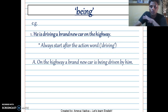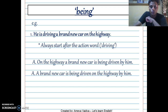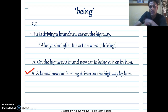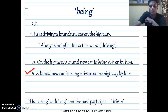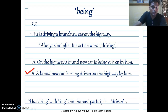Consider these options: number one — 'On the highway a brand new car is being driven by him'; number two — 'A brand new car is being driven on the highway by him.' The second option is correct. Start after 'driving' — 'a brand new car is being driven on the highway by him.' Remember to put the 'by' part at the end. Also note: 'being' is always used with a past participle — here 'drive, drove, driven,' so we use 'driven.'